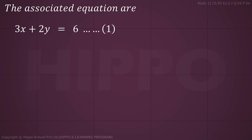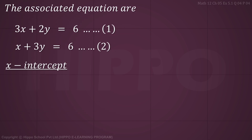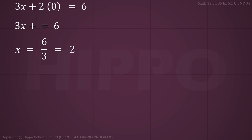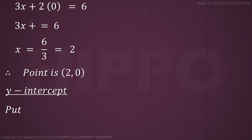For the x-intercept, put y = 0 in Equation 1: 3x + 2(0) = 6, which gives 3x = 6, so x = 2. The point is (2, 0). For the y-intercept, put x = 0 in Equation 1.